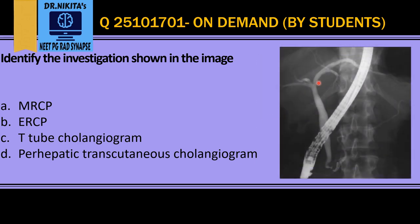Here you see the CBD and this is a pancreatic duct, so this becomes cholangiopancreaticography. Since we see a scope here — that is an endoscope — this becomes Endoscopic Retrograde Cholangiopancreaticography, that is ERCP. The scope helps us to identify that it is ERCP.